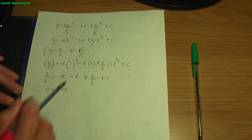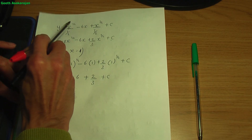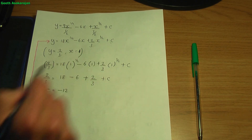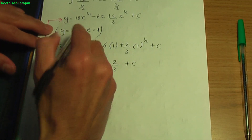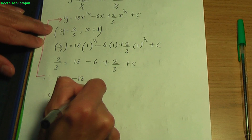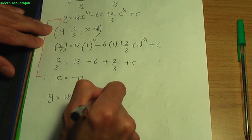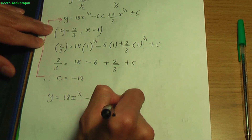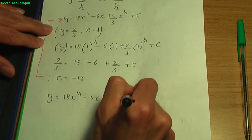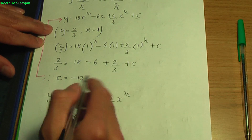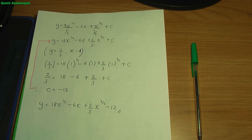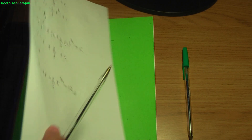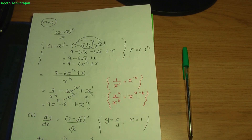Once we have the value of c, we replace it in the equation for y. So y equals 18x to the power of half minus 6x plus 2 over 3 times x to the power 3 over 2 minus 12. This is the answer to part b of question 7.